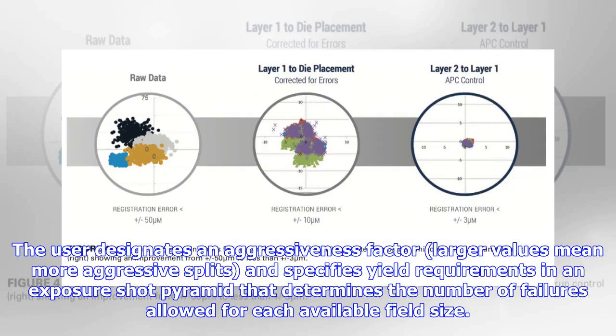The user designates an aggressiveness factor—larger values mean more aggressive splits—and specifies yield requirements in an exposure shot pyramid that determines the number of failures allowed for each available field size.